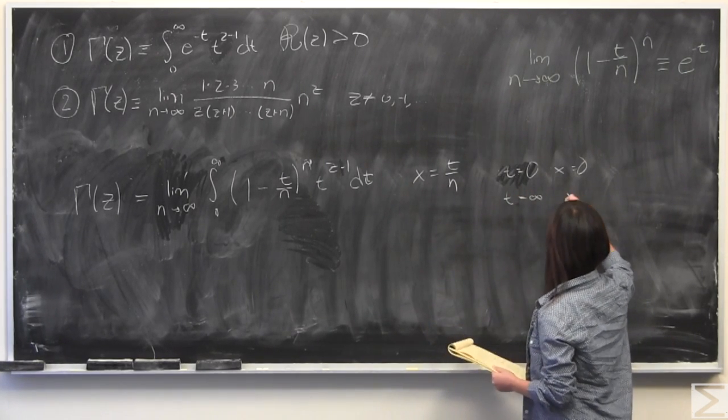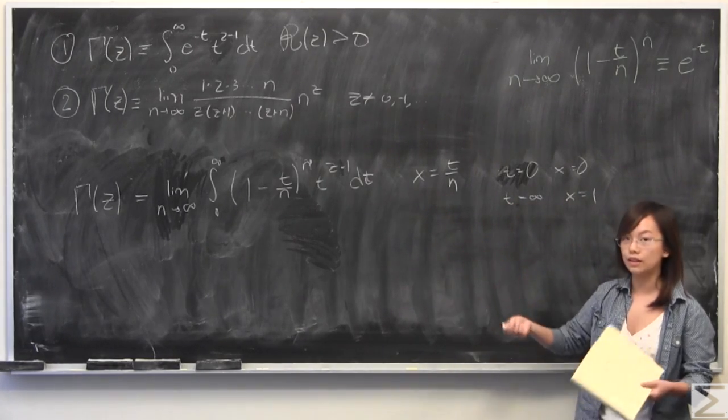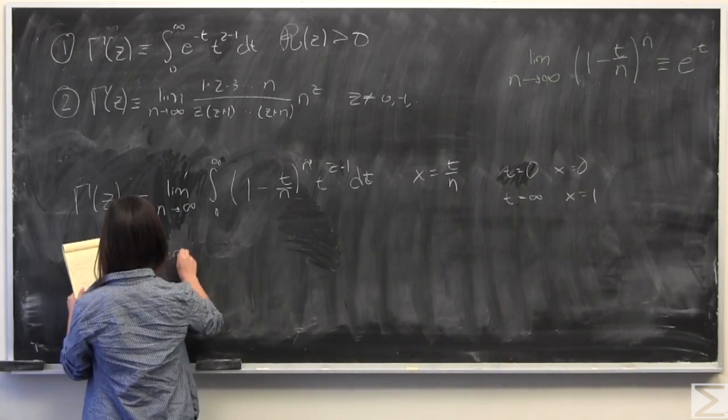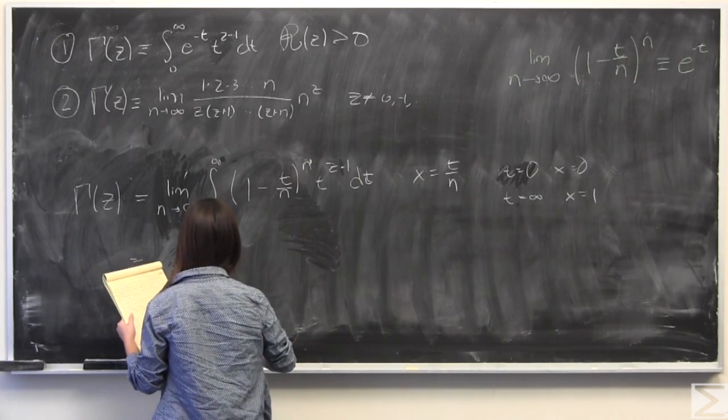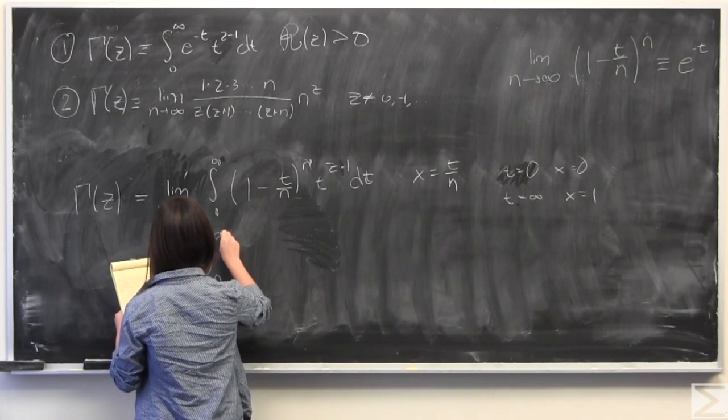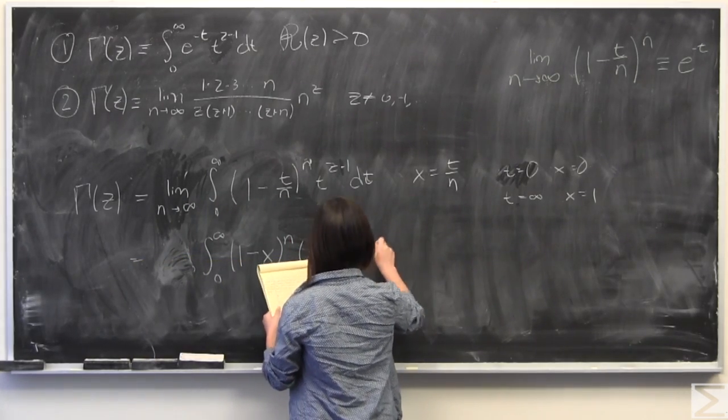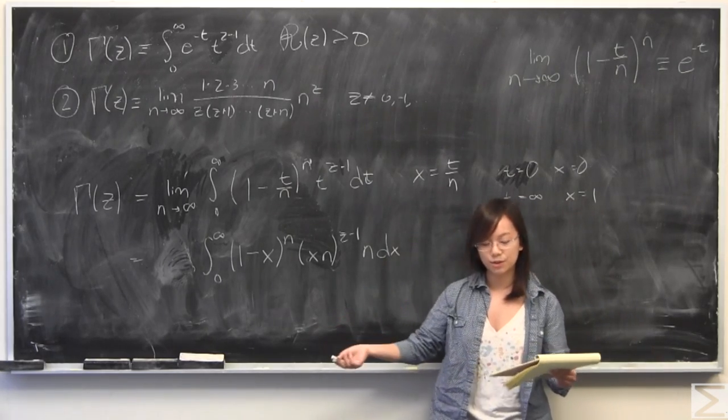t is equal to infinity. x is going to equal to 1 because we're taking limit as n goes to infinity. I'm going to plug this back in. Actually, for now, I'll drop the limit as n goes to infinity. Just know that it's there and that I will be putting it back in at the end. So I've put that back in. I've made all the necessary substitutions that had to happen.